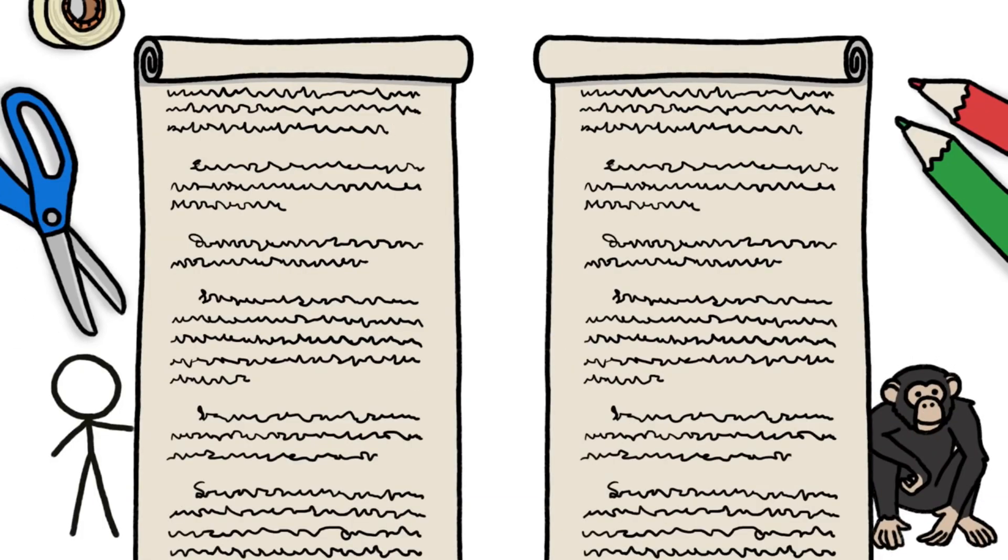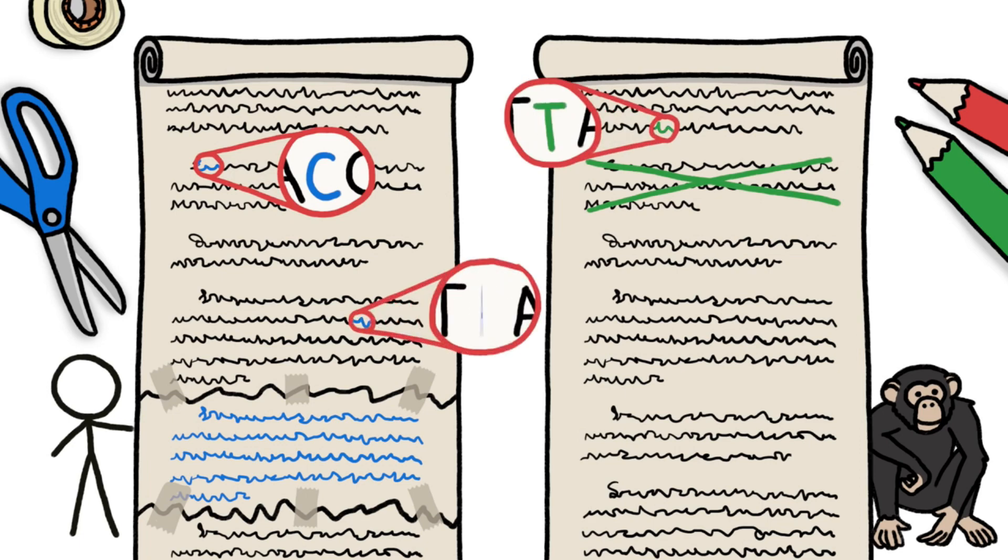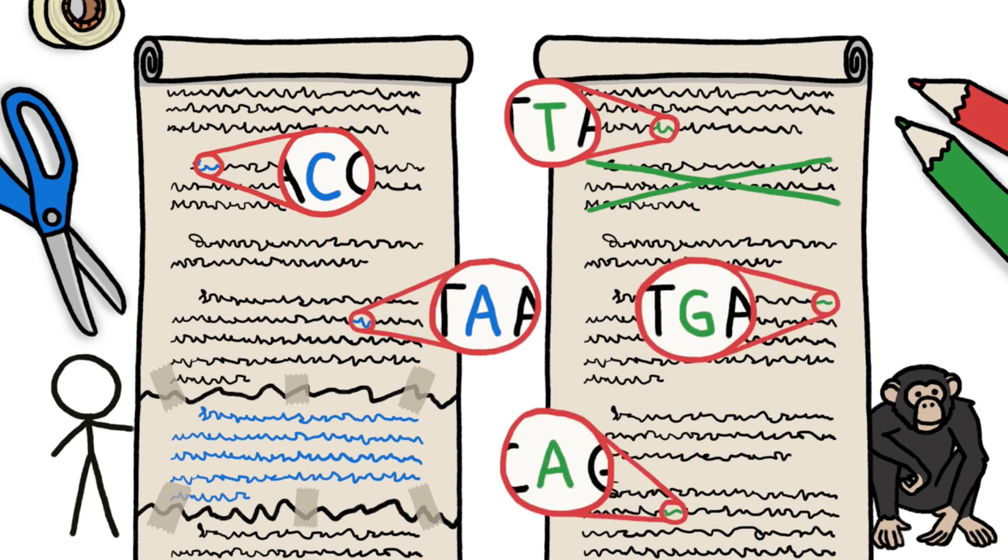Other large mutations revised huge sections of text, duplicating a chunk of human DNA here, erasing a chunk of chimp DNA there, while throughout the scrolls, tiny mutations swapped one letter for another.